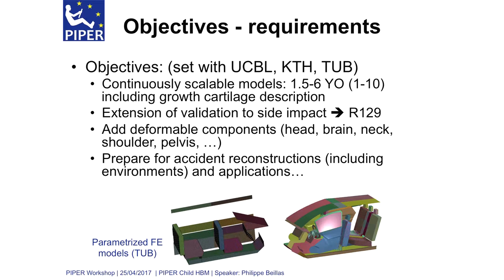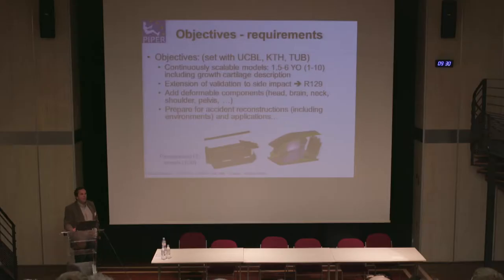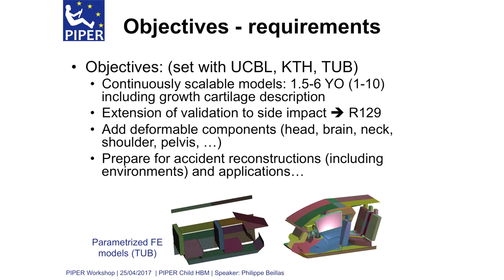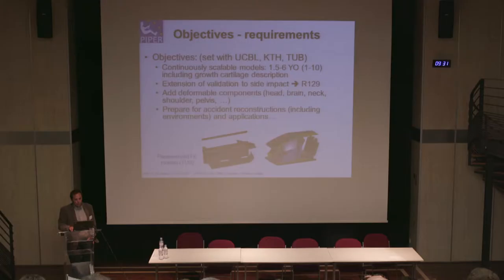We also aimed to extend the response and validation to side impact, to cover R-129 type possibilities, and to add deformable components — basically remove everything we simplified too much: head, brain, neck, shoulder, pelvis — and add those so we can better cover the whole model. One last objective was to prepare for future work on risk curves based on accident reconstruction, for which parameterized car environments were built by TU Berlin and will be distributed to assist with that.